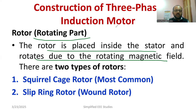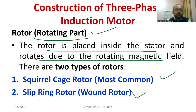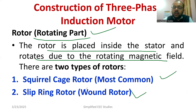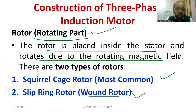According to the rotor construction, there are two types of induction motor. One is called a squirrel cage rotor, or squirrel cage induction motor. The other one is known as a slip ring induction motor, also called a wound rotor induction motor. Squirrel cage induction motors are most commonly employed, while slip ring induction motors are used where adjusting starting torque is required.